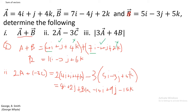Now combining like terms: for i, 8i minus 15i gives minus 7i. For j, 2j plus 9j gives 11j. For k, 8k minus 15k gives minus 7k. So 2A minus 3C equals minus 7i plus 11j minus 7k.